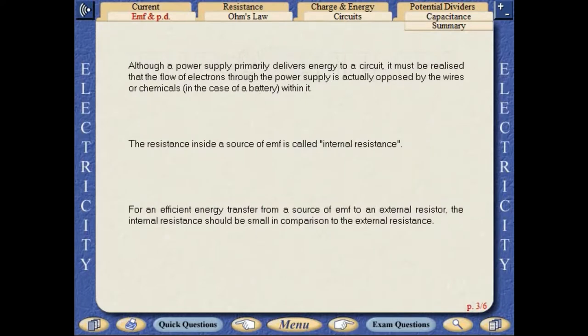Although a power supply primarily delivers energy to a circuit, it must be realized that the flow of electrons through the power supply is actually opposed by the wires or chemicals within it. The resistance inside a source of EMF is called internal resistance. For an efficient energy transfer from a source of EMF to an external resistor, the internal resistance should be small in comparison to the external resistance.